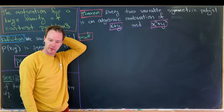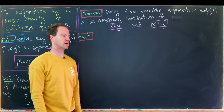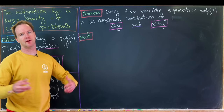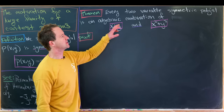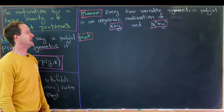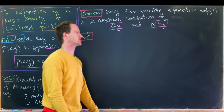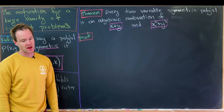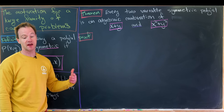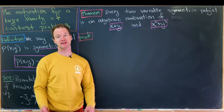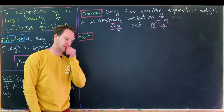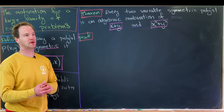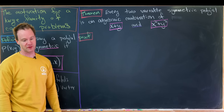To finish this video we're going to prove the following theorem — a baby version of a fairly large theorem. Every two-variable symmetric polynomial is an algebraic combination of x plus y and x squared plus y squared, the two power sum polynomials. It's enough to work with polynomials of homogeneous degree, meaning the degree in x plus the degree in y, because any polynomial can be split into pieces of homogeneous degree.